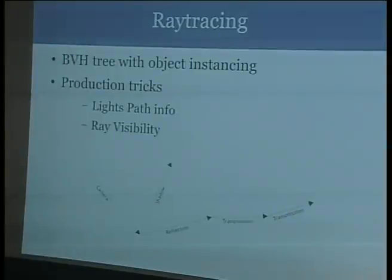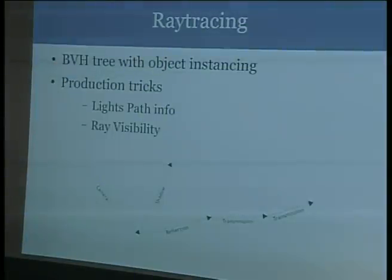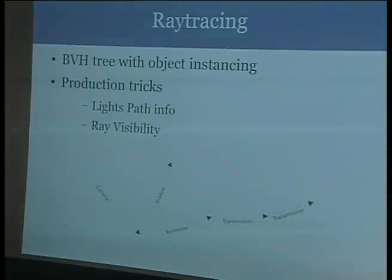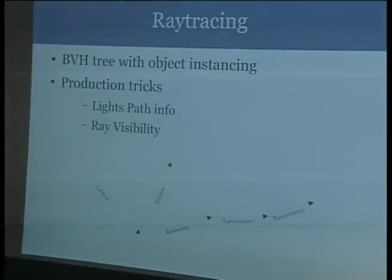For ray tracing we use a BVH tree and we support object instancing. The BVH tree means we can do updates very quickly. If we used something like a KD tree, it would be harder to update as you're moving objects or deforming meshes. BVH also seems to be fashionable nowadays — everyone is switching to it, and the new rendering research and a lot of render engines are using it now.